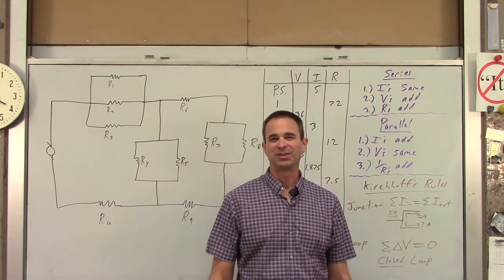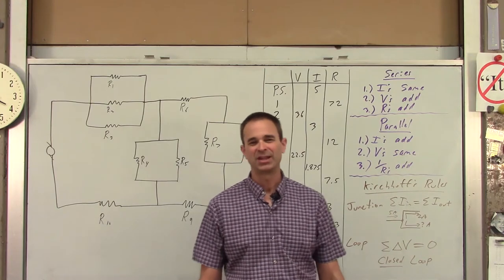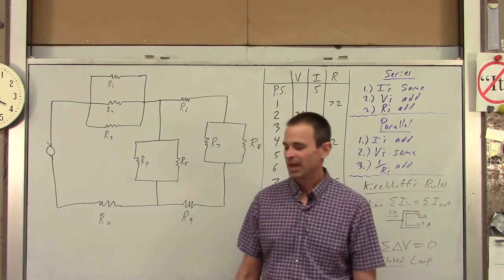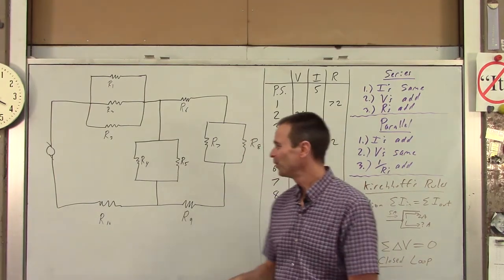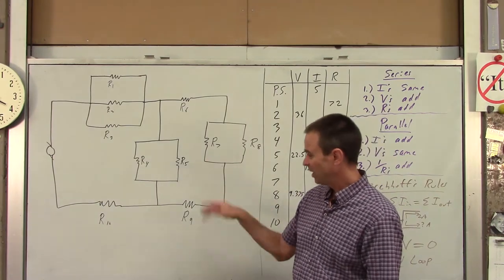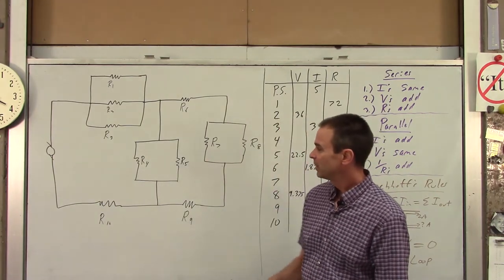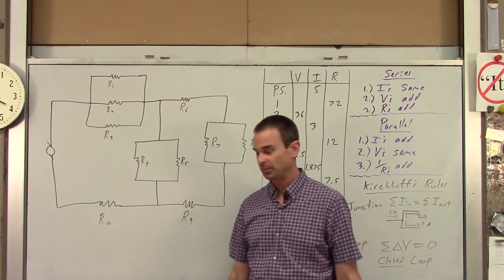Welcome to AP Physics at Lyons Township High School. Today we've got an example involving a circuit, and it's one of our circuit puzzles. So I have a circuit that's got 10 resistors in it, labeled 1 through 10, some power supply, a voltage that we don't know.